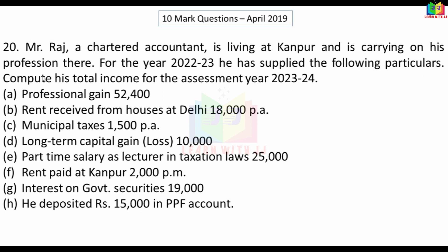Professional gain: Rs.52,400. Rent receipt from houses at Delhi: Rs.18,000 per annum. Municipal tax: Rs.1,500 per annum. Long-term capital loss: Rs.10,000. Part-time salary as lecturer in taxation law: Rs.25,000. Rent paid at Kanpur: Rs.2,000 per month. Interest on government security: Rs.19,000. He deposited Rs.15,000 in PPF account.